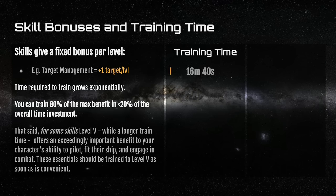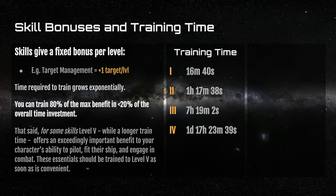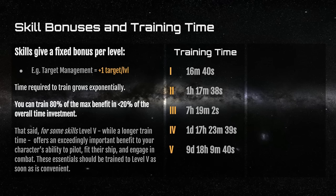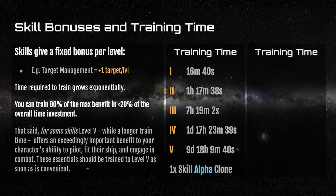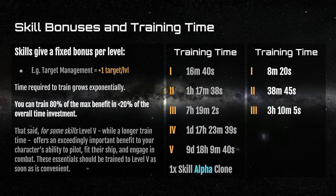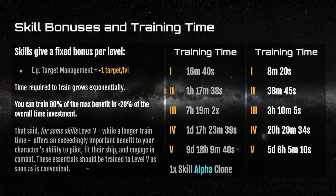Training times for Alpha clones start at 16 minutes for level one, just under an hour and a half for level two, seven hours for level three, and almost two days for level four — and almost 10 days for level five. By comparison, Omega training times are much shorter: about eight minutes for level one, 38 minutes for level two, three hours and 10 minutes for level three, and about five days for level five of a first-time skill.